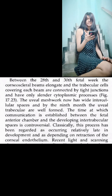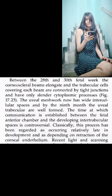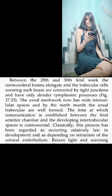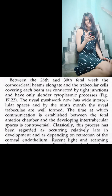Between the 28th and 30th fetal week, the corneoscleral beams elongate and the trabecular cells covering each beam are connected by tight junctions and have only slender cytoplasmic processes. The uveal meshwork now has wide intercellular spaces, and by the 9th month, the uveal trabeculae are well formed.